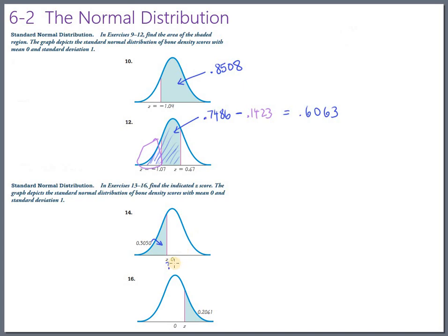So the z-score down here turned out to be negative 0.51. And if this is bone density scores, that's a bone density score of negative 0.51. And the last one is the same idea. They're telling you the area.